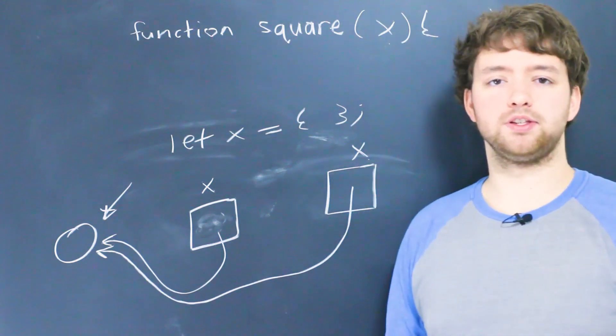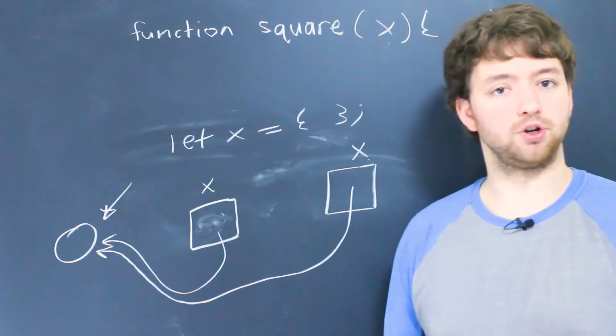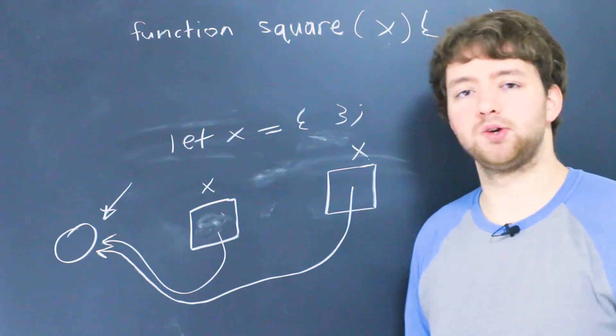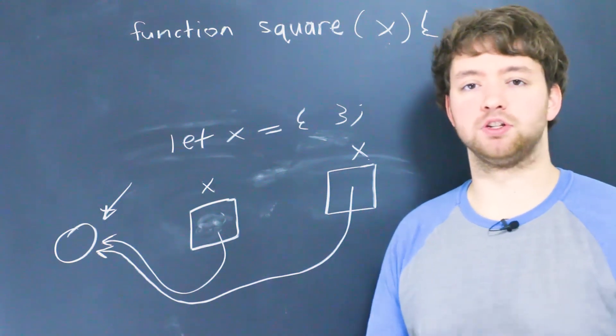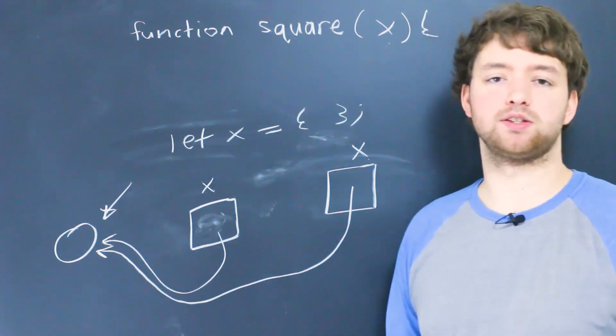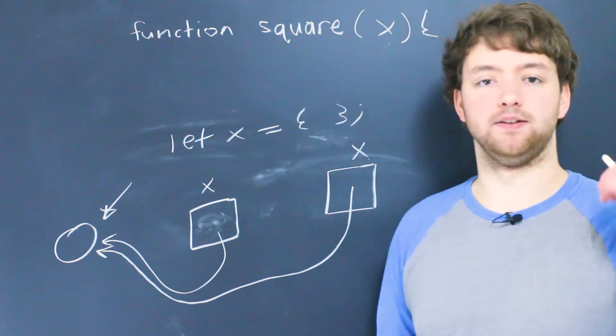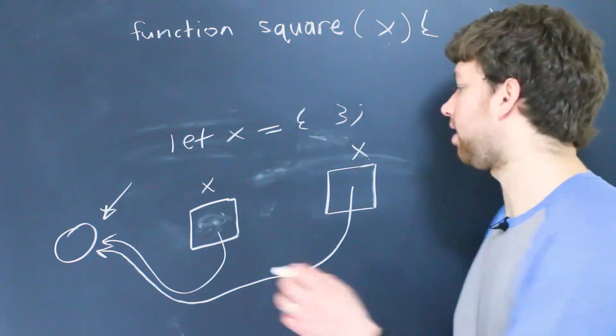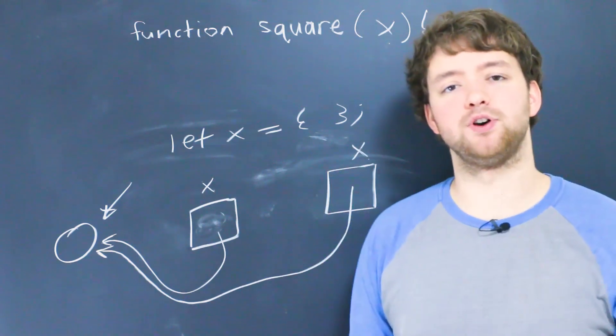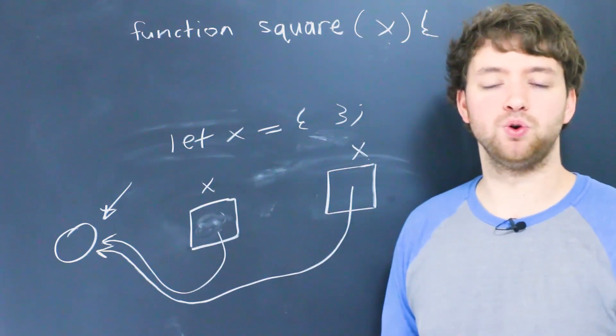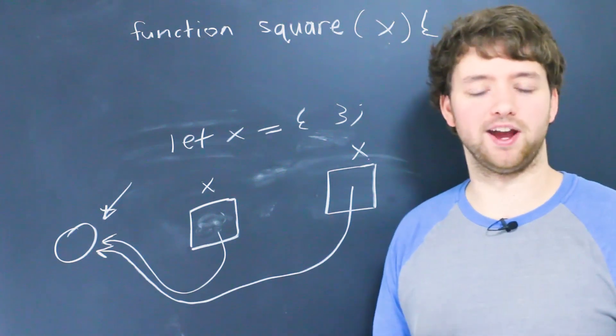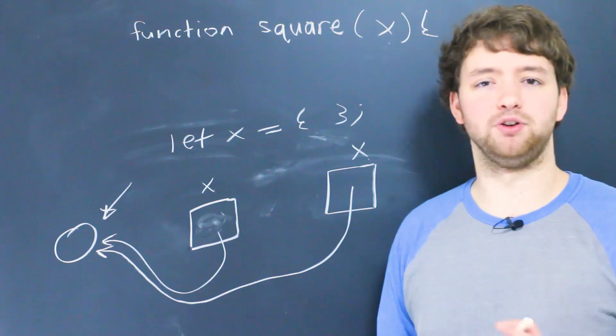And there's a lot of confusion about this because there's not very clear terms and different languages have different ways of doing this. So for example other languages will say pass by value versus pass by reference or value types versus reference types. So in JavaScript the way it works is that everything is passed by value. So the value is copied from the argument to the parameter. It just so happens though that sometimes that value is a reference.